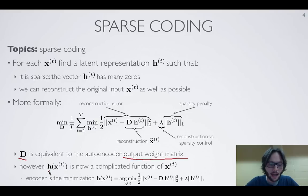What changes though is that the way we are going to obtain the latent representation for an input is going to be much more complicated for the sparse coding model. In the autoencoder, it was just a linear transformation followed by non-linearity.